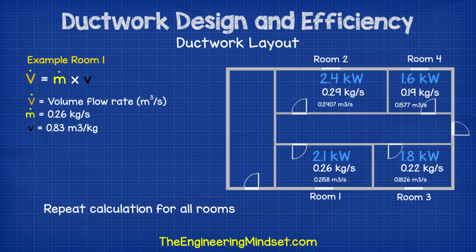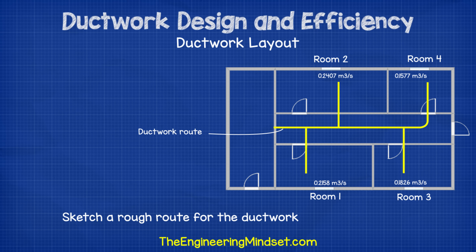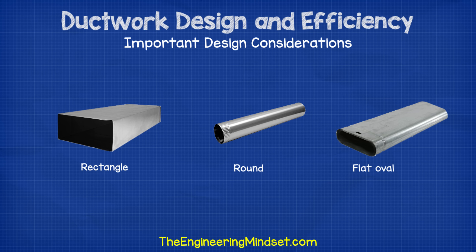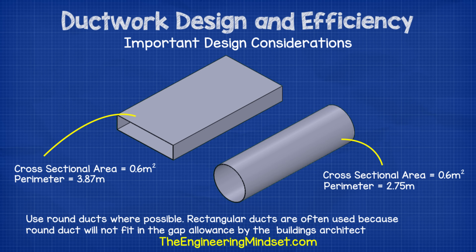Now we're going to sketch out our ductwork route onto the floor plan so we can start to size it. Before we size that, we need to consider some things which will play a big role in the overall efficiency of the system. The first point is the shape of the ductwork. Ductwork comes in round, rectangular, and flat oval shape. Round duct is by far the most energy efficient type, and that's what we're going to use in our worked example. A round duct with a cross-sectional area of 0.6 meters squared has a perimeter of 2.75 meters, whereas a rectangular duct with equal cross-sectional area has a perimeter of 3.87 meters. The rectangular duct therefore requires more metal, adding more weight and cost. The larger perimeter also means more air contact with the material, adding friction. Friction means a fan needs to work harder, resulting in higher operating costs. Always use round duct where possible.